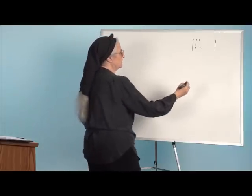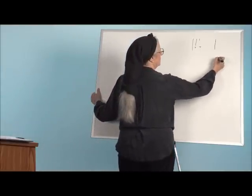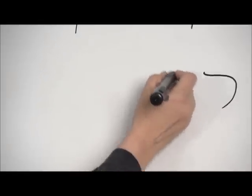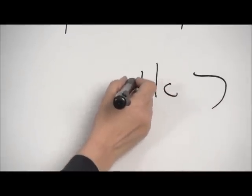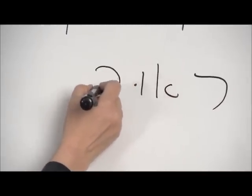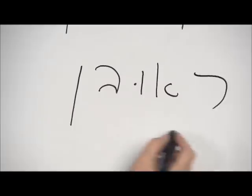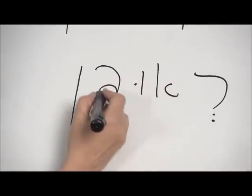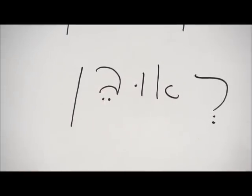Now we can write the first name: R'uven. Resh, Aleph, here's a Vav, here's your Bet — remember, it has a little C to it — and the final Nun. R'uven.